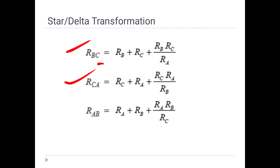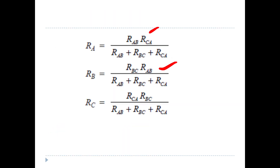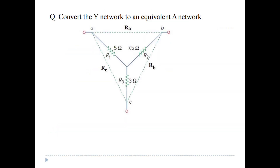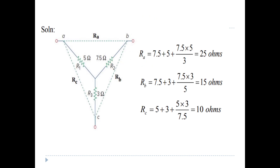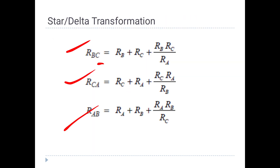The value of RB in the delta network equals RA times RB, plus RB times RC, plus RC times RA, divided by the opposite star resistance. We can use the Y network equivalent. The answer is that the Y network is equal to delta, and star parameters convert to delta parameters.